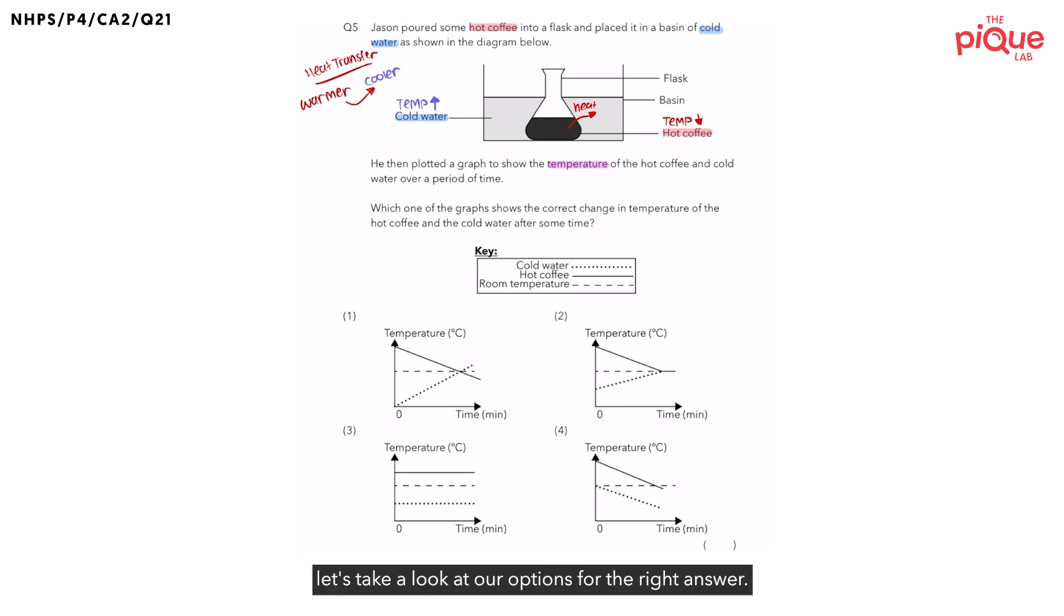With this established, let's take a look at our options for the right answer. Let's first focus on the cold water graph, which I will highlight in blue. Which of the following options can we immediately eliminate? Remember, earlier on, we noted that the temperature of cold water must increase. Hence, we can eliminate option 3, where the temperature of the cold water remains the same, and option 4, where the temperature of the cold water is decreasing instead of increasing. Now, we are left with only option 1 and option 2.